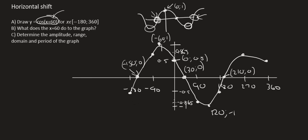Question C says determine the amplitude. Well, the amplitude is the distance from the resting position. So the resting position of this graph is going to be this green line over here. And so if we look at the maximum distance up, well that's still going to be 1. This graph hasn't been moved in the vertical direction, so the amplitude will be 1.